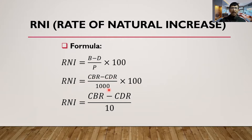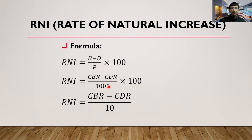In this formula, CBR means Crude Birth Rate and CDR means Crude Death Rate. Notice that no migration measures are included — only crude birth rate and crude death rate are used. This second formula can also be simplified: (CBR − CDR) / 10, since dividing by 1000 and multiplying by 100 cancels to dividing by 10. Both formulas are equivalent.